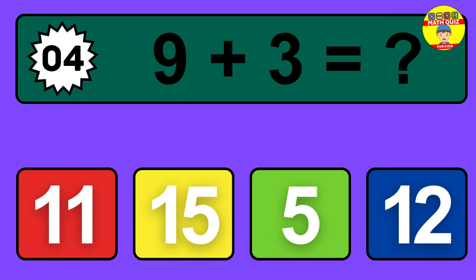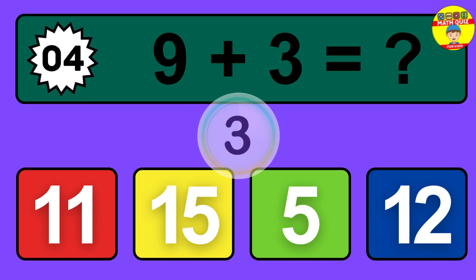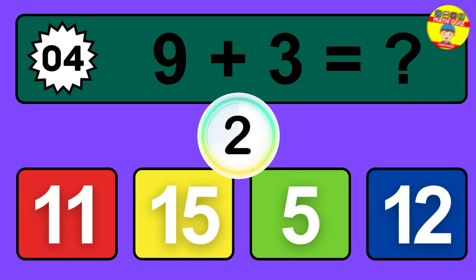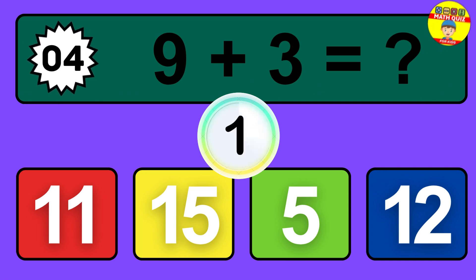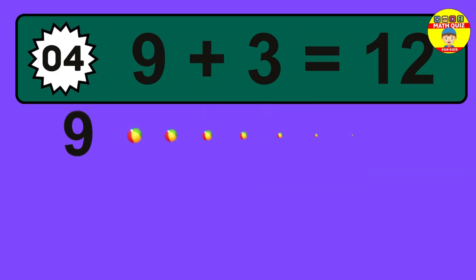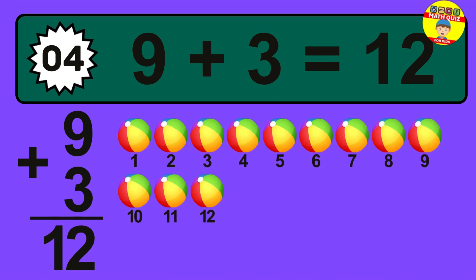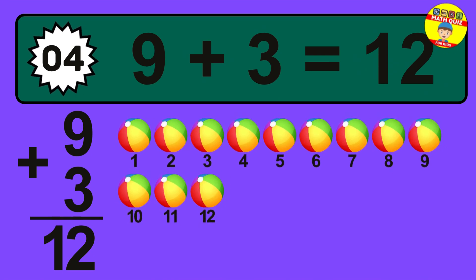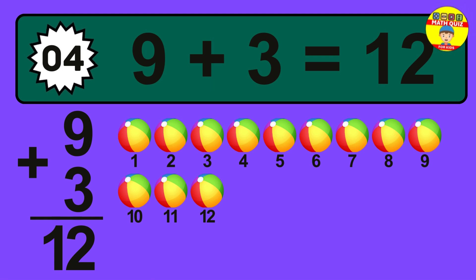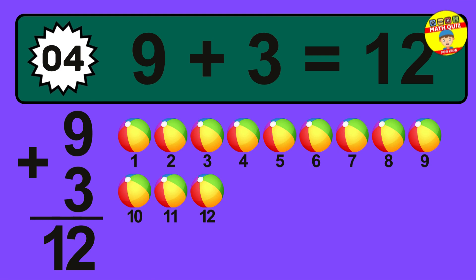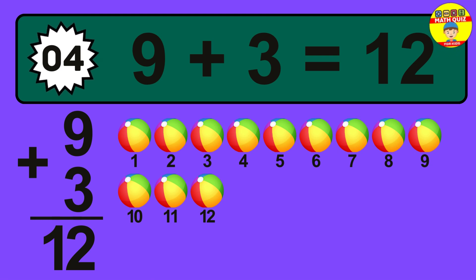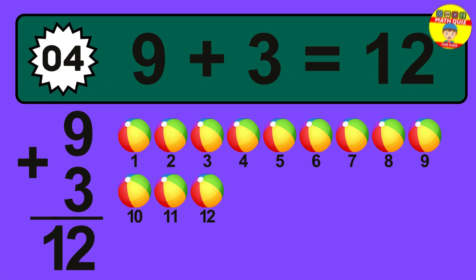Question 4. 9 plus 3 equals what? The answer is 9 plus 3 is 12. Let's count it: 1, 2, 3, 4, 5, 6, 7, 8, 9, 10, 11, 12.